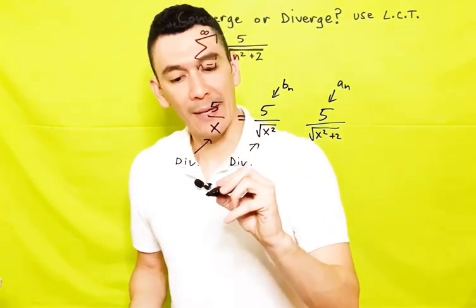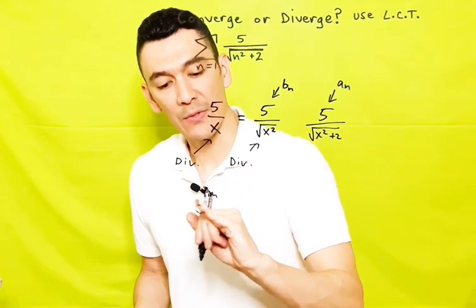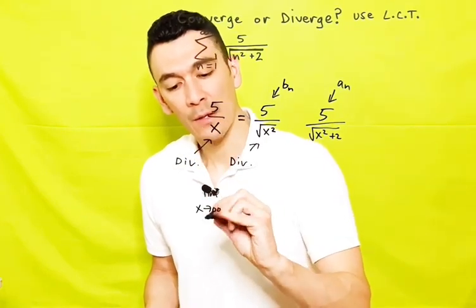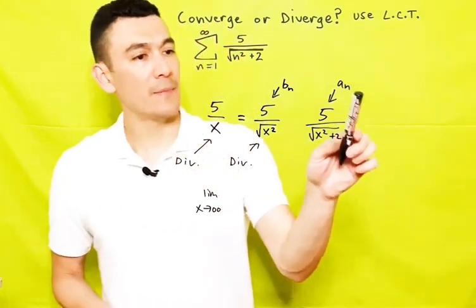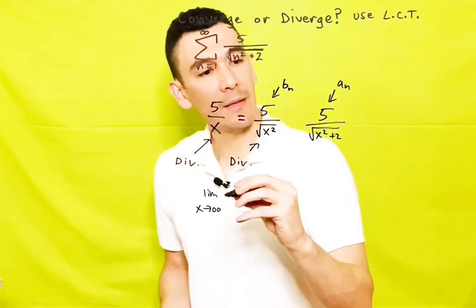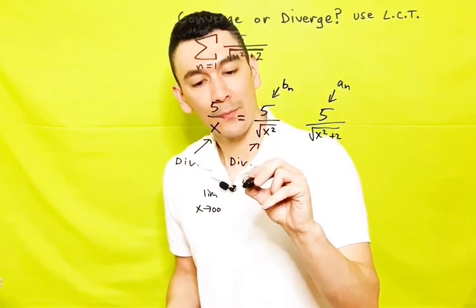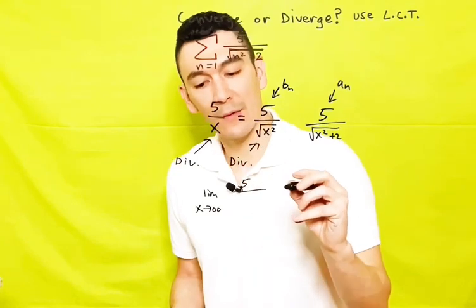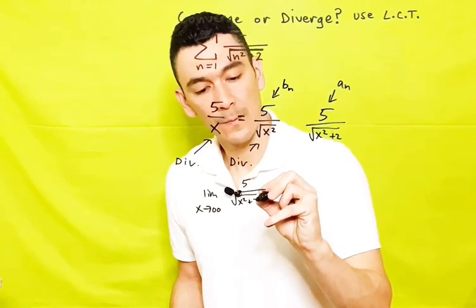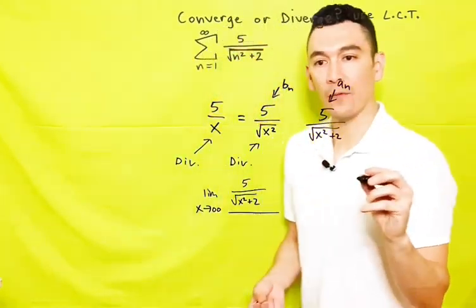We have to take the infinite limit - let's go X approaches infinity. So the limit as X approaches infinity of A sub n over B sub n, which would be 5 over the square root of X squared plus 2, because that's A sub n, sitting over B sub n.